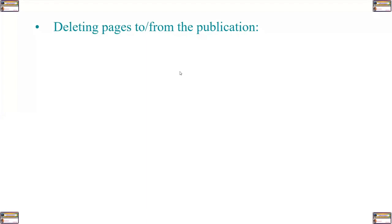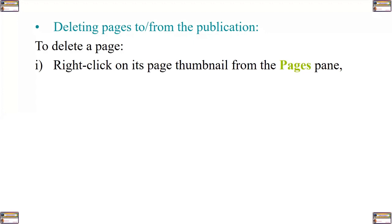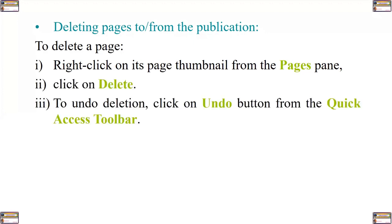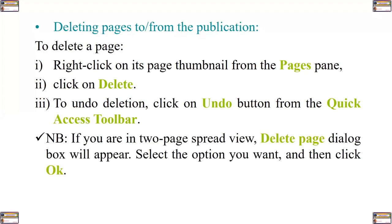What about if you don't require certain pages in your publication? How do you delete them? To delete a page, right-click on the page thumbnail from the Pages pane, then click on Delete. Or click the Undo button from the Access toolbar. Note that if you are in a Page Spread view, the Delete Page dialogue box will appear — select the page you want to delete and click OK. The following is a sample demonstration on how to delete a page in the publication Introduction to MLSwap. We have five pages. I can click on page one thumbnail, then right-click and click Delete. I'm told the selected page contains objects — do I want to delete anyway? I click Yes.